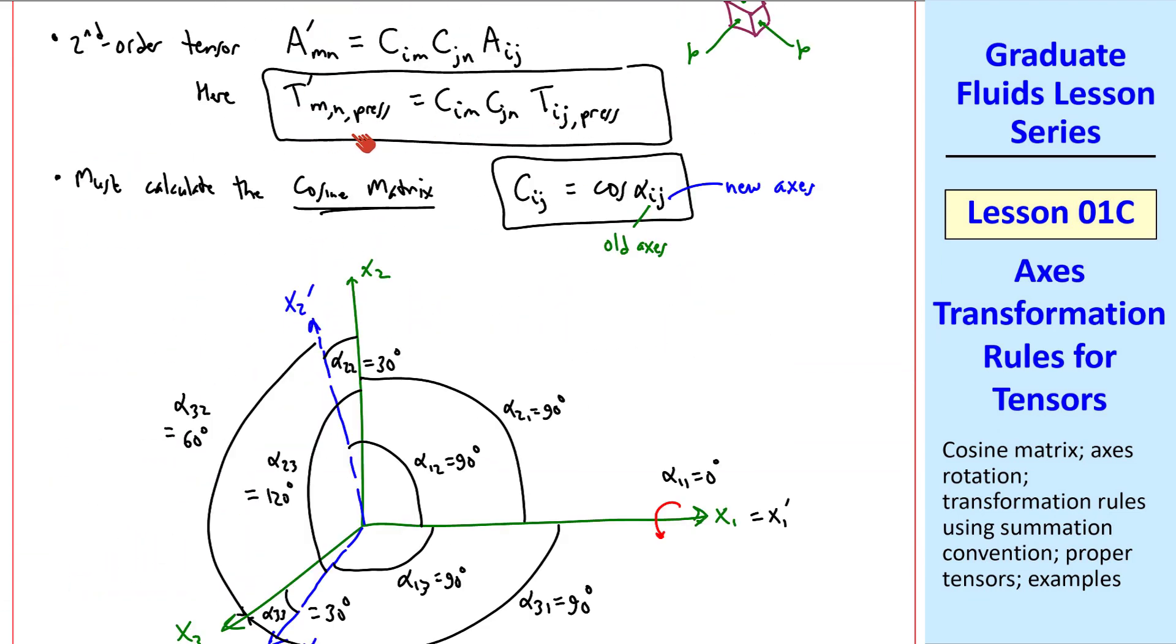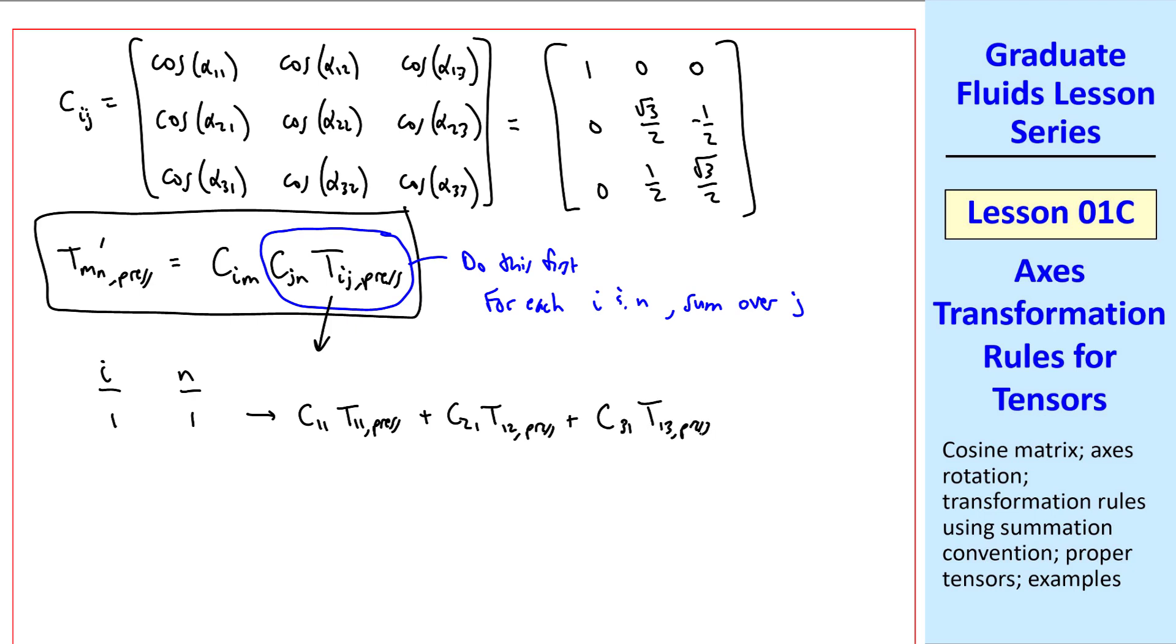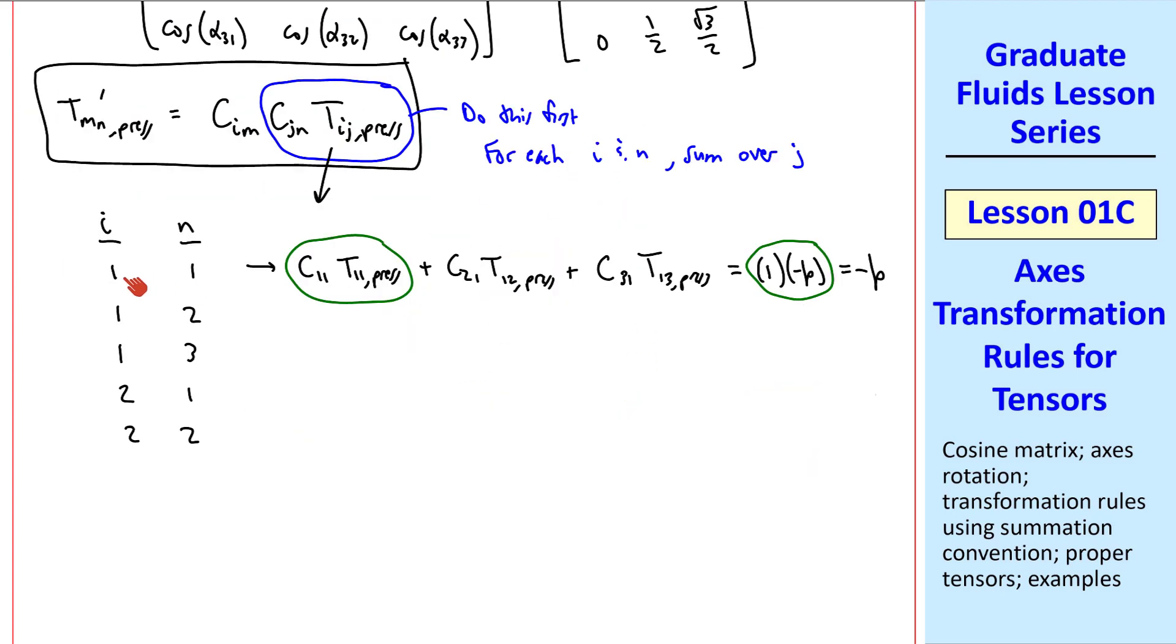Now that we have the cosine matrix, we must use this equation to get our transformed stress tensor. I rewrite that equation here. You can see that it would be very tedious to put all of these in, but it turns out that we could work on this part first. This amounts to saying that for each i and n, we sum over j. Since in this circled part the i and the n are free indices, but j is repeated, I'll make myself a little table: i, n, and then calculate this part. When i and n are both 1, we have c11 t11 pressure plus c21 t12 pressure plus c31 t13 pressure. This first term is 1 from our cosine matrix and negative p from our original tensor in the original axes. c21 and c31 are both 0, so our final answer is that when i and n are both 1, we get negative p. You can repeat this for all combinations of i and n, and you can try this on your own.